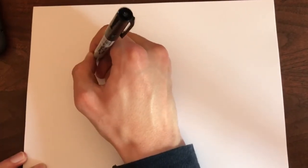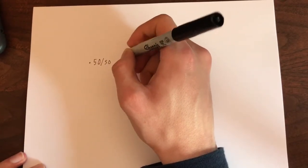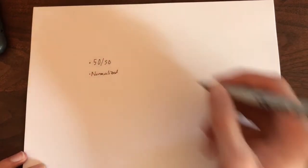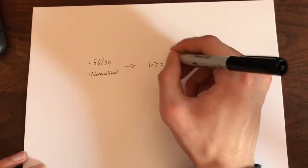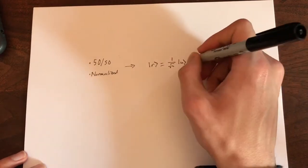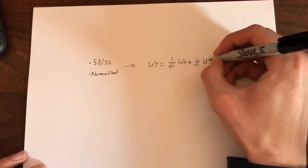The other condition that we must satisfy is that the vector is normalized. We can create a simple vector that satisfies these two requirements and call it the right vector. So 50-50 and normalized would lead to a vector that looks like this. We'll call it the right vector. It's 1 over root 2 times the up state plus 1 over root 2 times the down state.